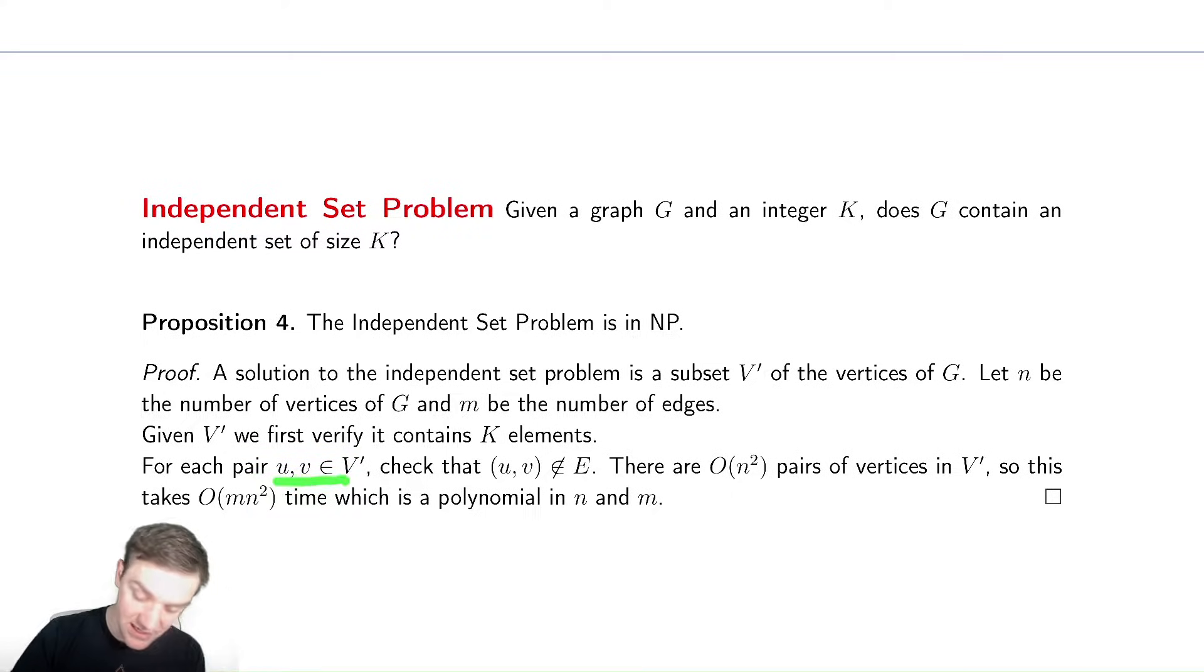For each pair of vertices in the independent set, I need to check that they aren't in the edges. This is a very bad algorithm because I'm just going to check every single pair of vertices. There's at most O(n^2) pairs, and I could check every single edge, which takes M. So it's O(Mn^2). That's all I care about - it's polynomial. It could have been O(Mn^5 billion), I don't care. It's polynomial. There's not an exponential explosion which would cause it to not happen in polynomial time.